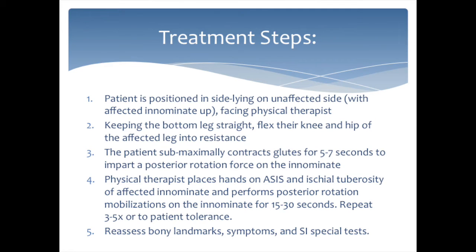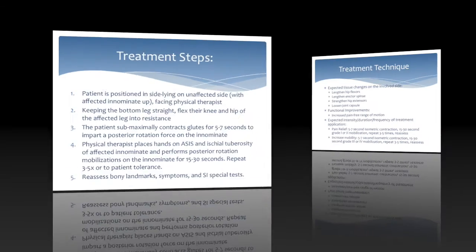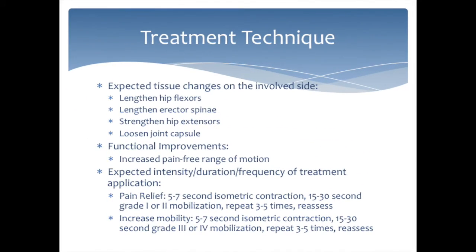After the technique is complete, bony landmarks, symptoms, and SI special tests should be reassessed. Expected tissue changes on the involved side are lengthened hip flexors and erector spinae, strengthened hip extensors, and a loosened joint capsule. Functional improvements for the patient include an increase in pain-free range of motion.